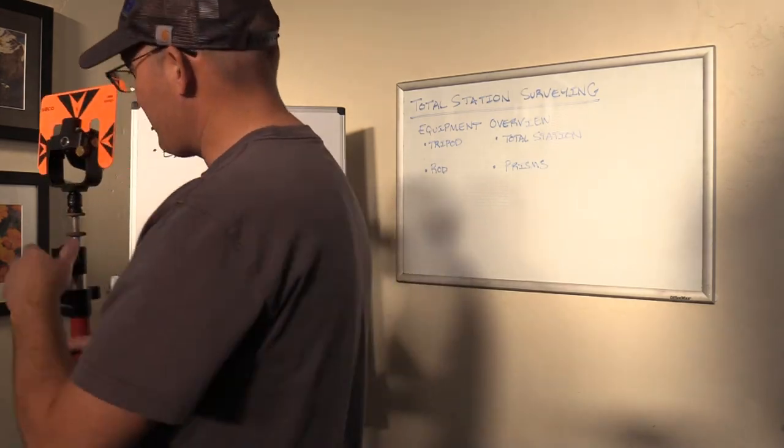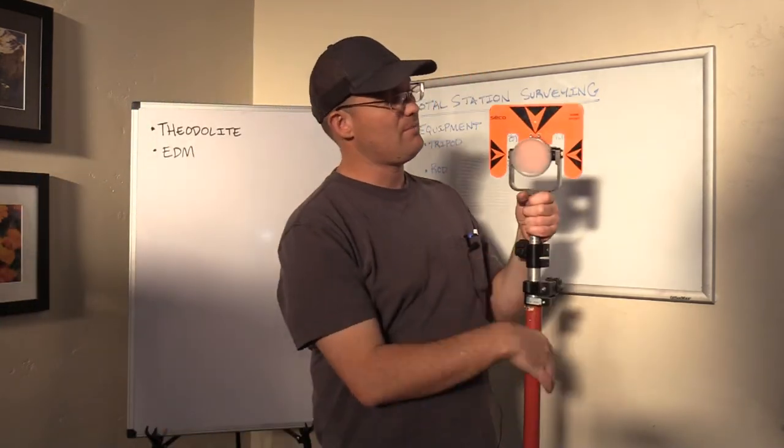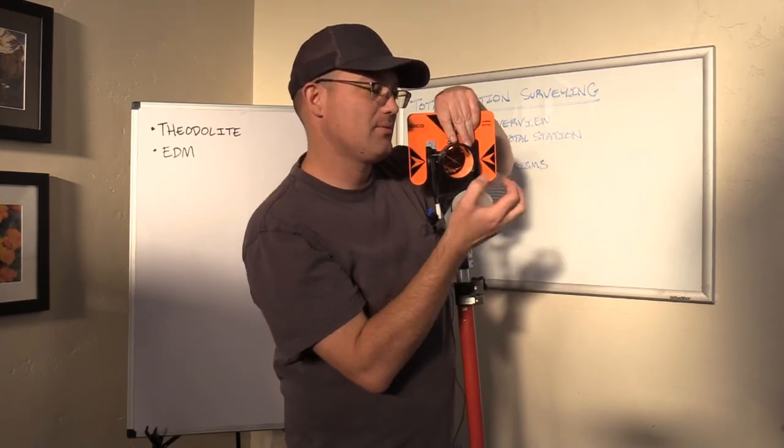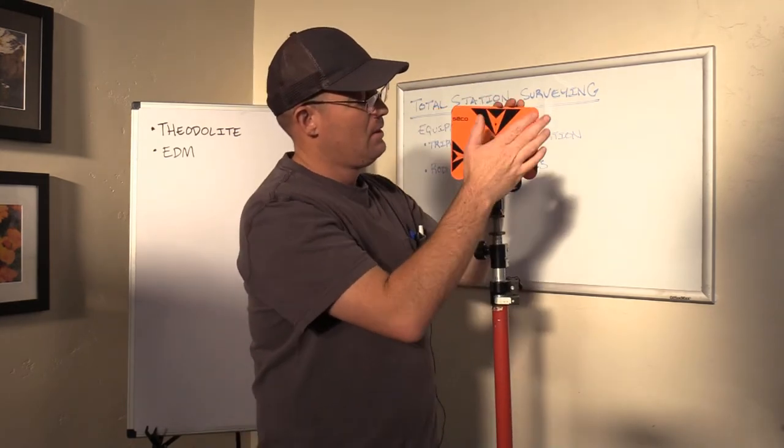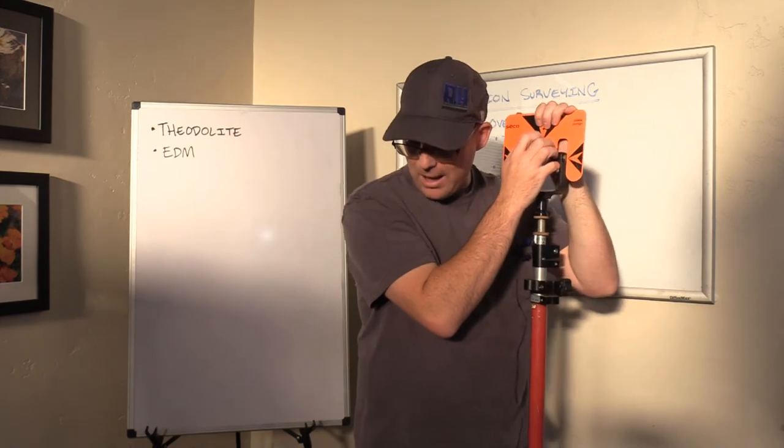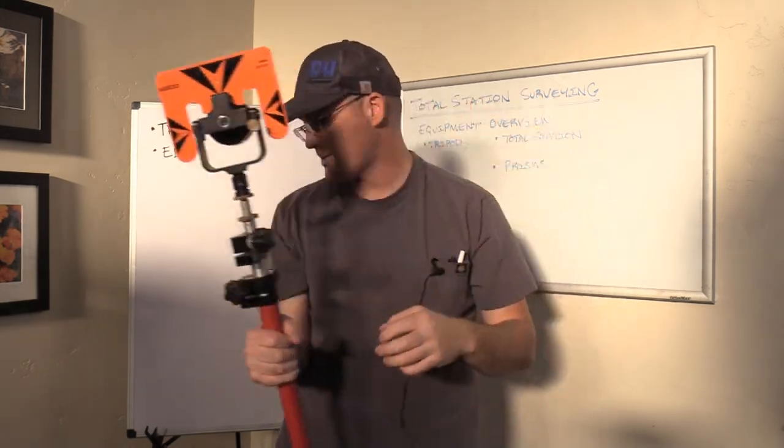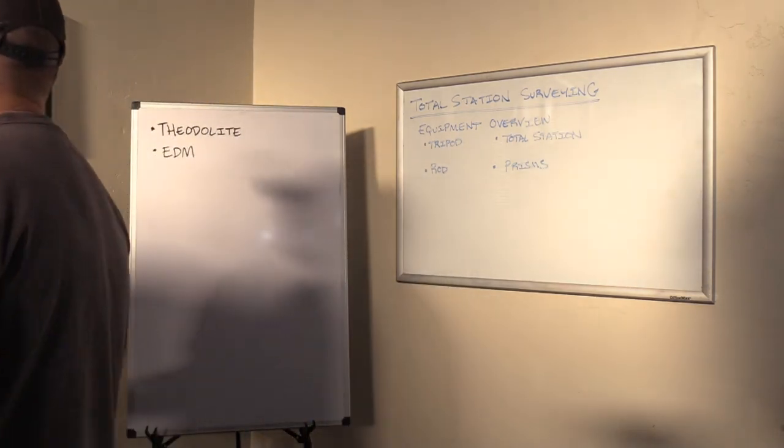Now, let me show you a different kind of prism. So this is just a regular 30 millimeter prism. You'll notice it's got just one face. So the prism has one face. When you're working with a robotic total station, you want a prism that the robot can track from all sides. So we have a different kind of prism. It's called a 360 prism.